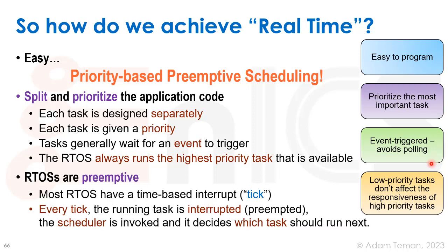The bottom line is that real-time operating systems are always preemptive — regular operating systems can be preemptive or non-preemptive, but RTOSs are always preemptive. They are based on a time-based interrupt called a tick. Every millisecond or so, an interrupt from the system timer stops the running task — that's preemption. The scheduler is then invoked to decide which task to run next: continue the current task, run a higher priority waiting task, or give a similar-priority task its turn.